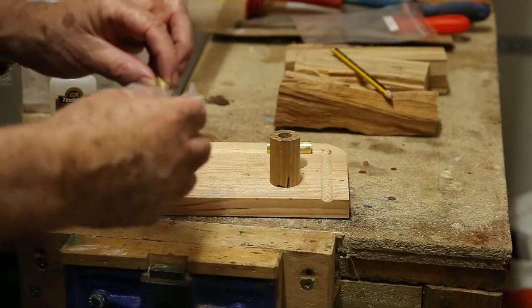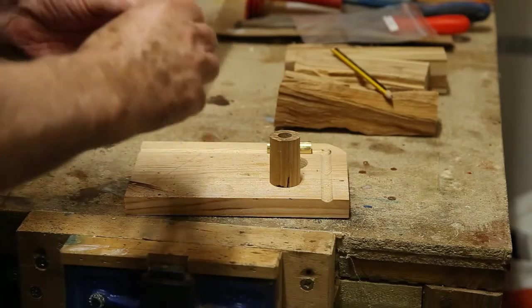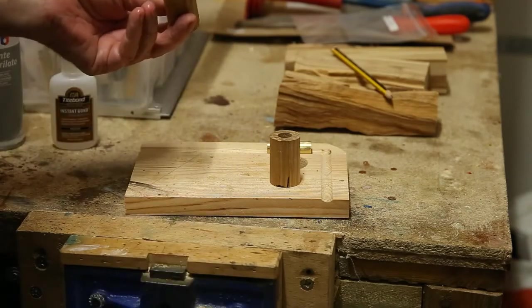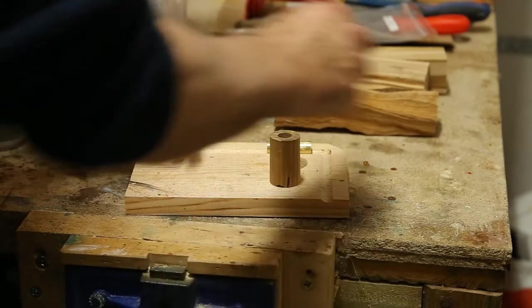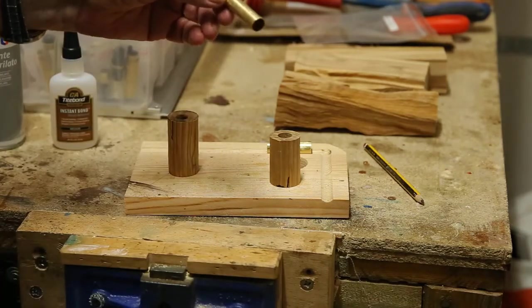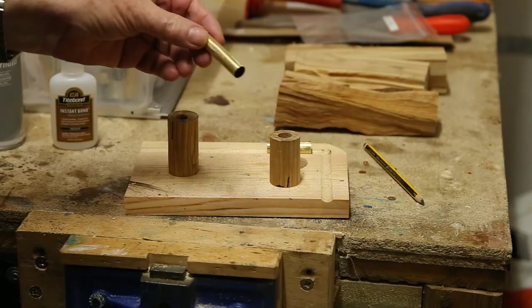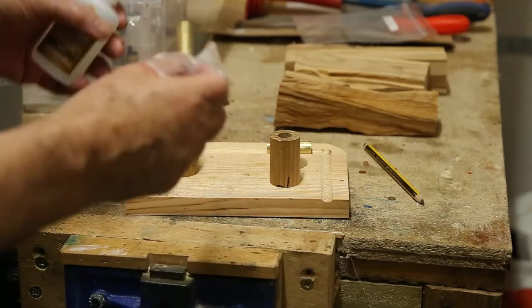I'm going to glue the tubes into the blanks using super glue, instant super glue. The tubes have to be sandpapered into roughness. And then these little bags on my fingers stop the super glue from sticking with me.